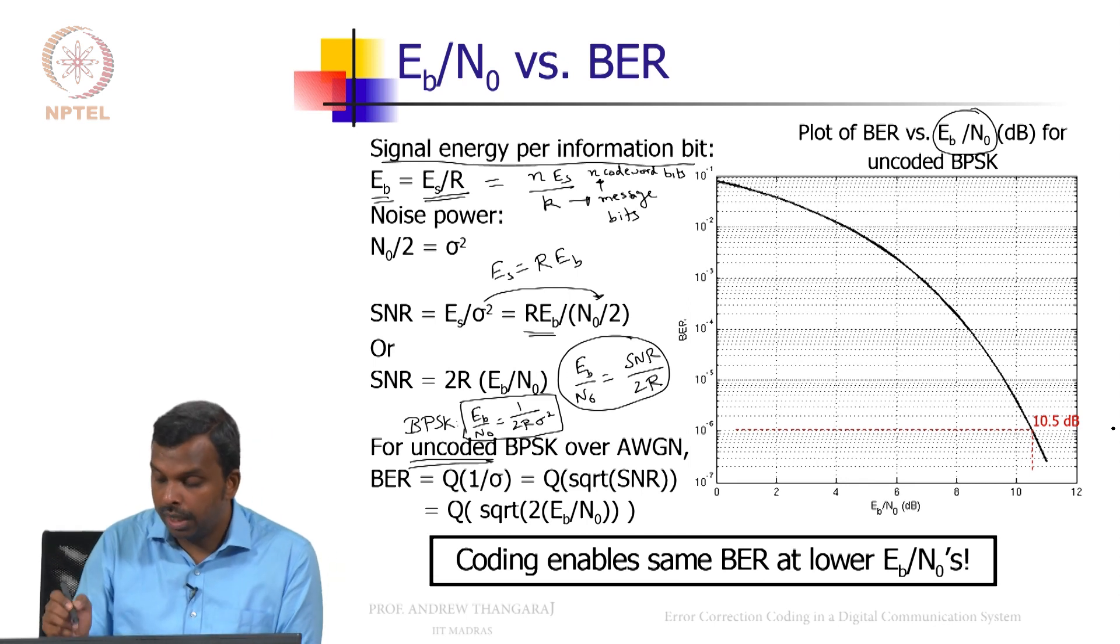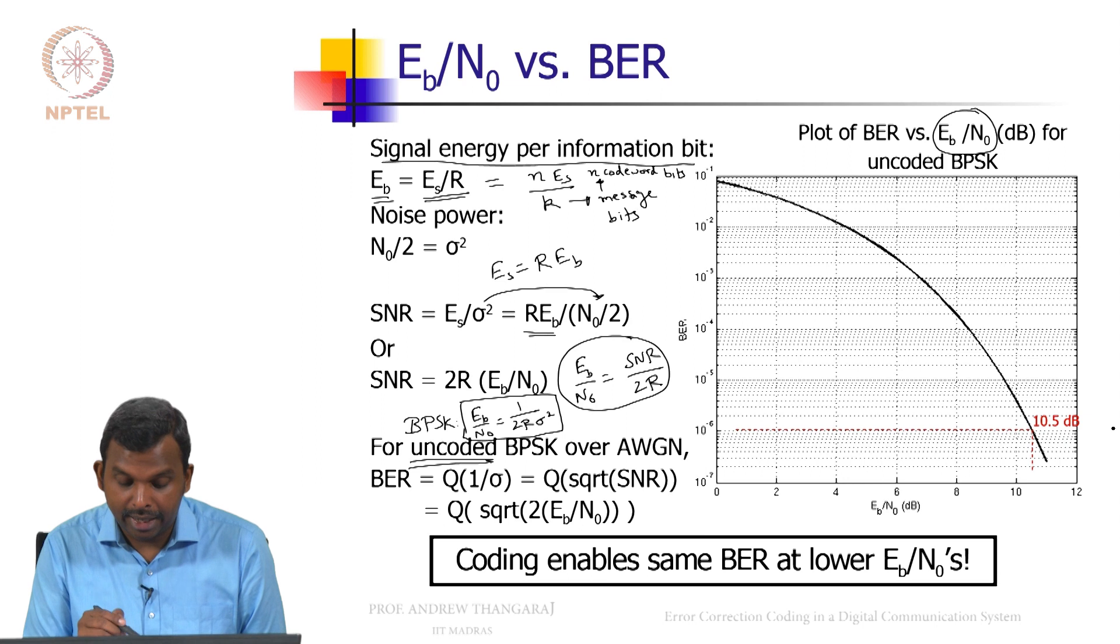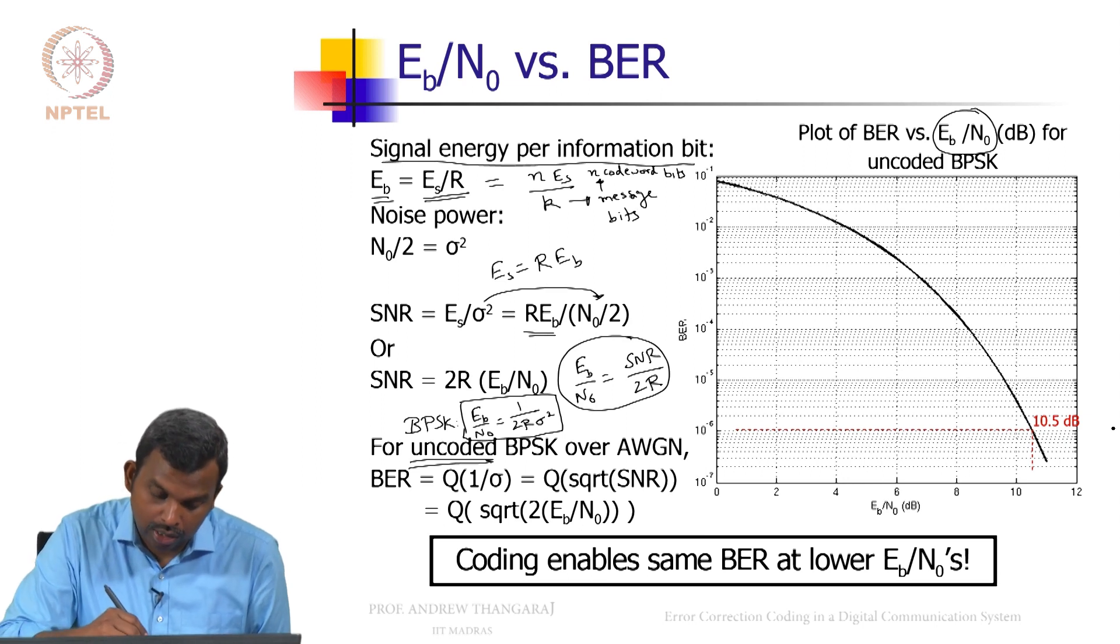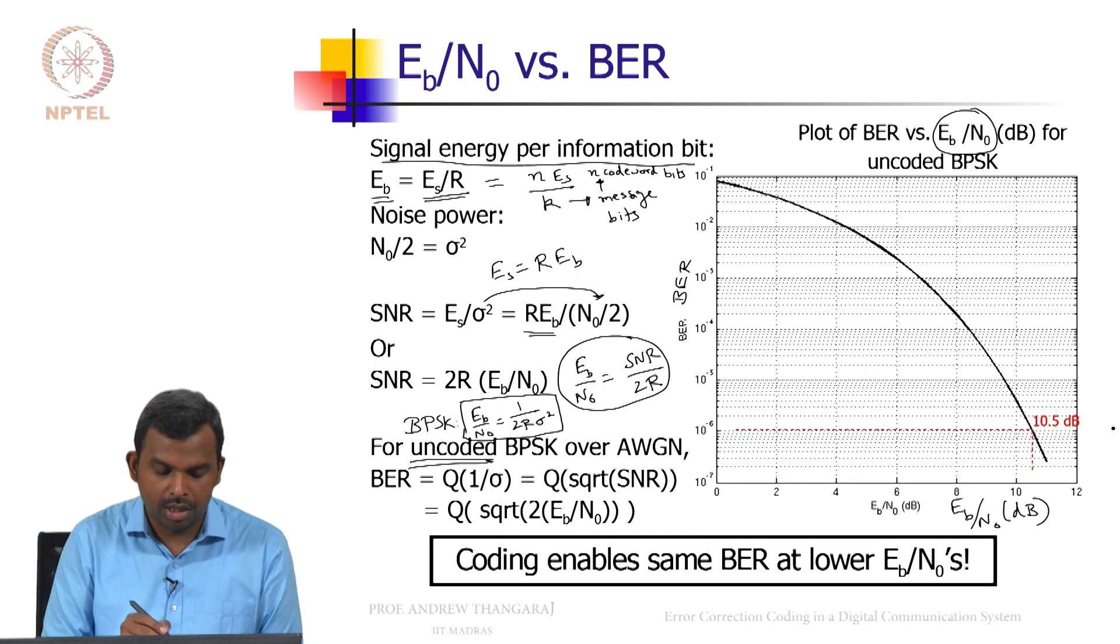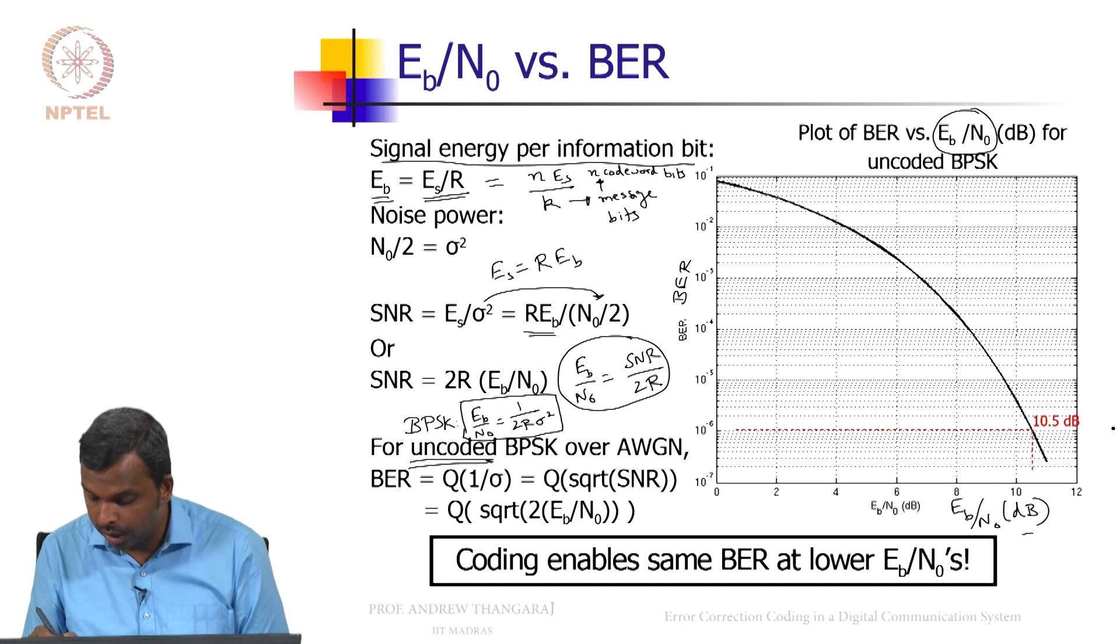And you can make a plot of bit error rate. This is BER on the Y axis versus Eb over N0 in dB. How do you convert Eb over N0 to dB? You do the same thing. You take 1 by 2 R sigma square and then you do 10 times log base 10.